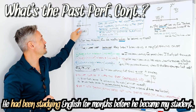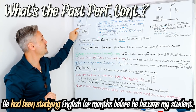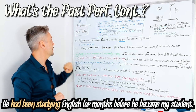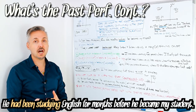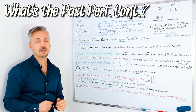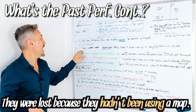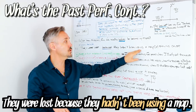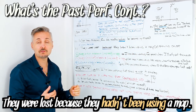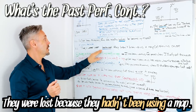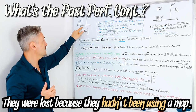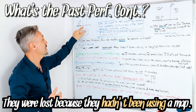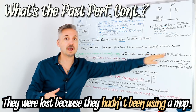If you look at the timeline: 'He had been studying English for months before he became my student.' So 'he became my student' is right after on the timeline. We also use 'when', 'because', 'for', and 'since' — I'm going to look at that in a minute. Another example: 'They were lost because they hadn't been using a map' — for example, some tourists in Rome. They were lost right here. Why? Because they hadn't been using a map, so they weren't using a map before they were lost. And 'because' is showing a cause.